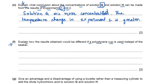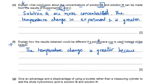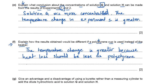Explain how the results would be different if a polystyrene cup is used instead of a beaker. Polystyrene is an insulator, so because of that the temperature change would be greater because heat loss will be less. We write: the temperature change should be greater because heat loss should be less, as a polystyrene cup is an insulator.